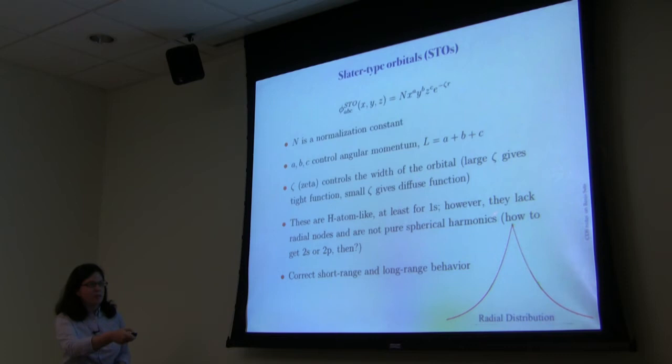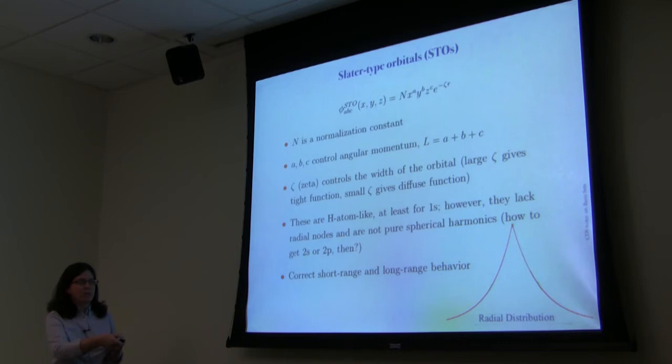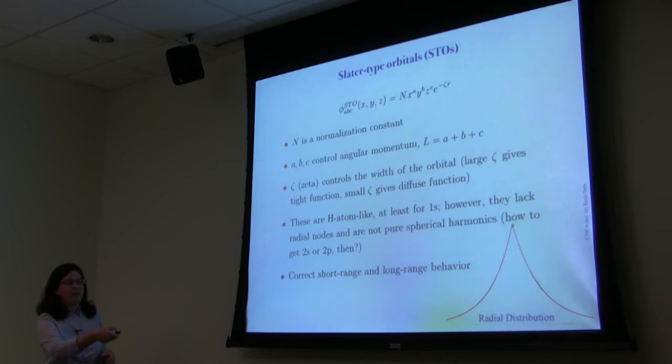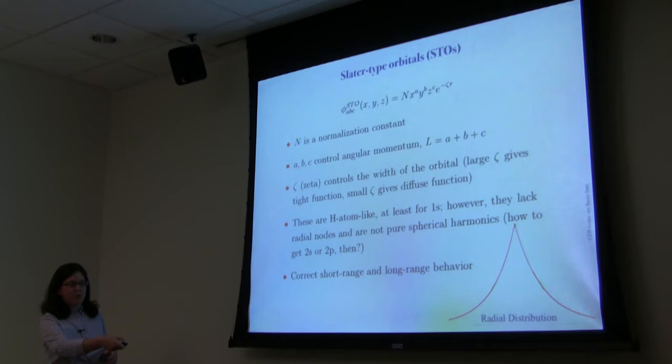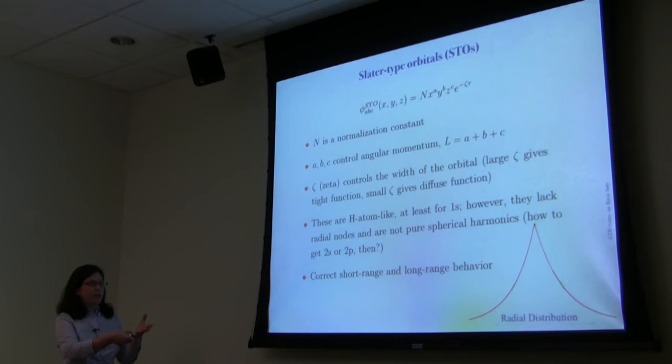A Slater-type orbital shows the radial distribution of electron density about a single atom, with the nucleus at the origin. This has both correct short-range and long-range behavior: the cusp at short range is correct, and it has the correct asymptotic distribution at long range. These are in fact correct for things like hydrogen atoms.